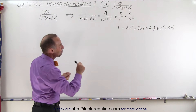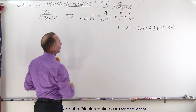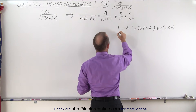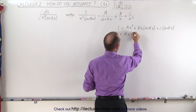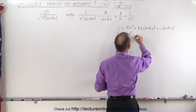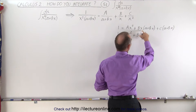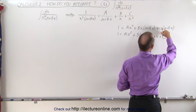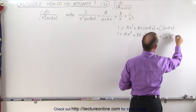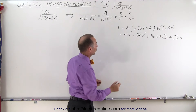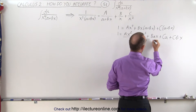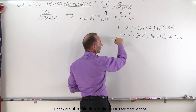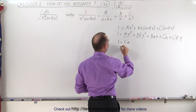Now let's solve for A, B, and C. We collect common terms by multiplying everything out. We get: 1 equals ax squared, plus big B times bx squared, plus bax, plus Ca, plus Cbx. Looking at the constant terms — since on the left side we only have a constant — we can say that 1 equals Ca, or C equals 1 over a. So we've already solved for one of our three constants.